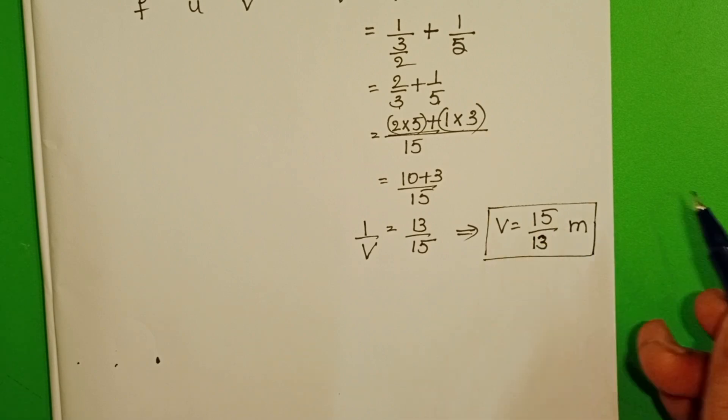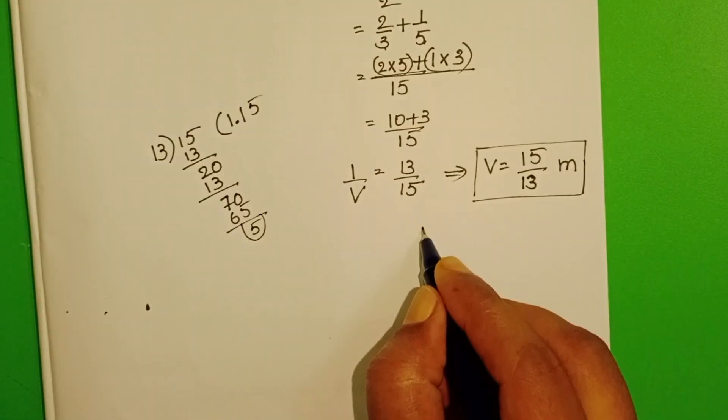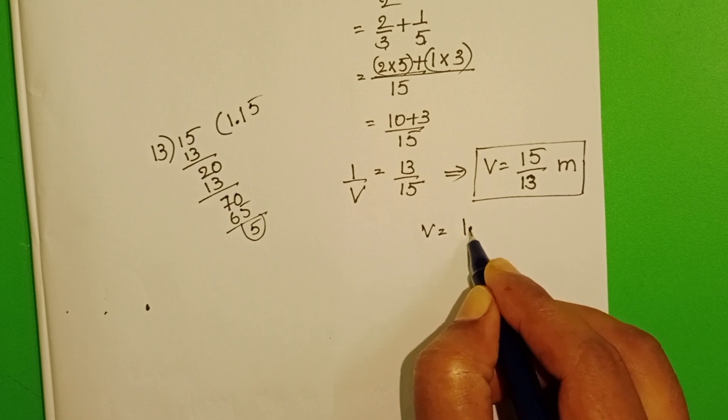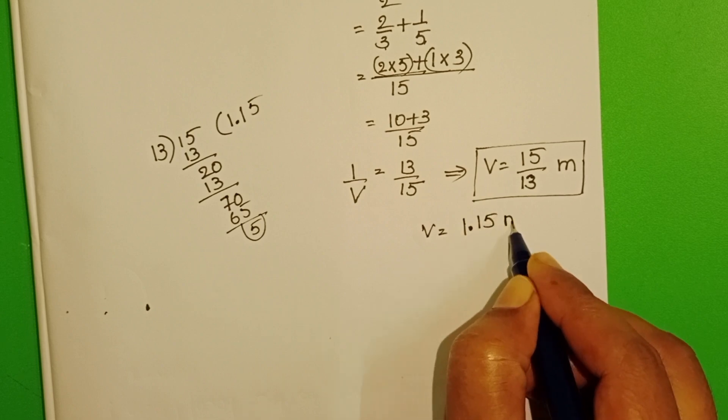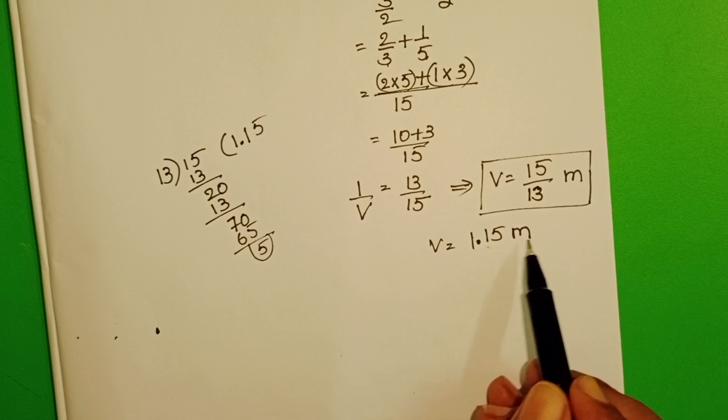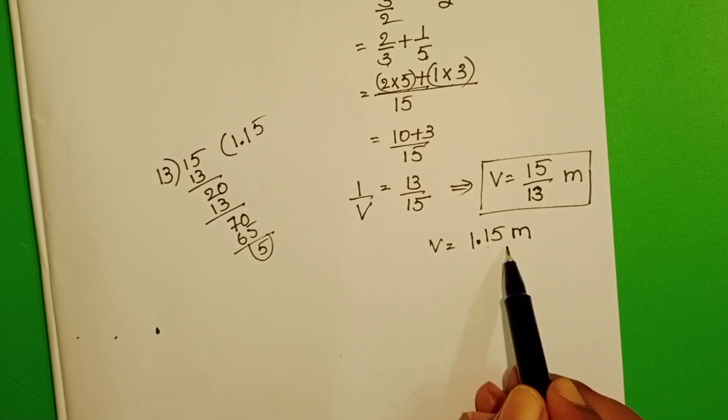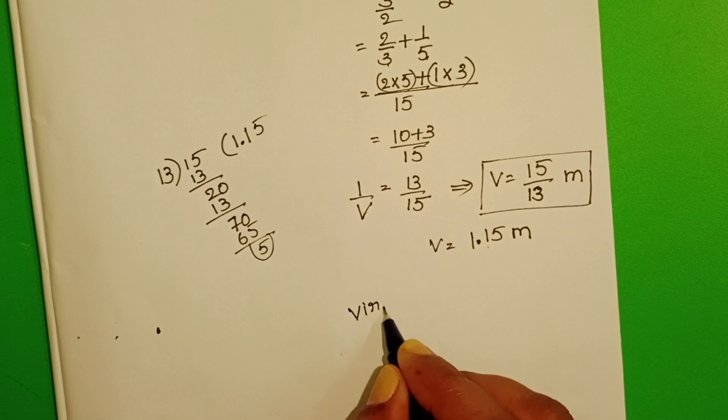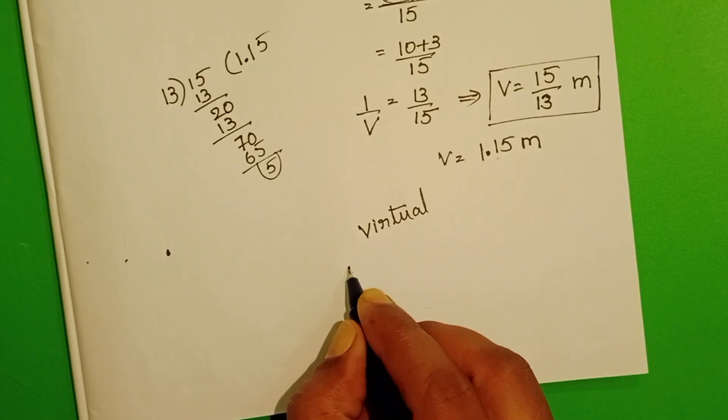Find out this value in decimal form. In decimal, image distance is 1.15 meters. This is positive. We know for virtual images only, the image distance is positive. Now, find out the magnification.